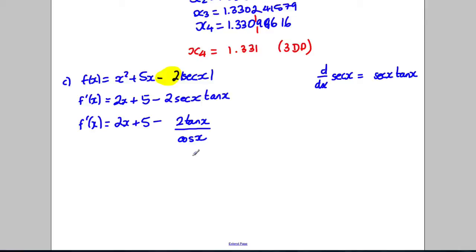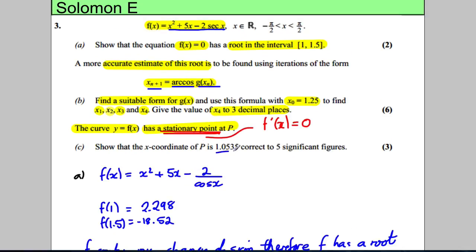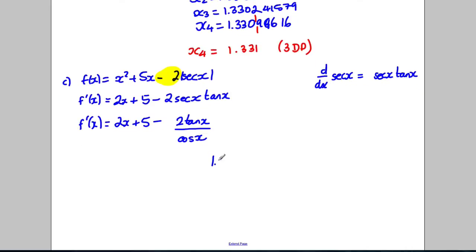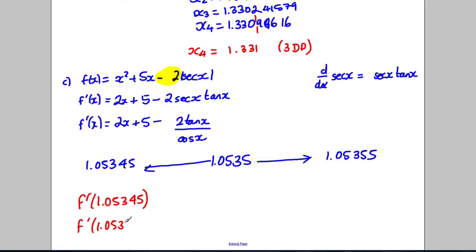Okay. So we could rewrite it like that. Now, if we're trying to show it's got a root of 1.0535, so 1.0535, what we need to do is check this upper bound. So 1.05355 and check this lower bound here, 1.05345. Substitute those into f dashed x and show that there's a change of sign around 0. So what we're going to work out is f dashed here of 1.05355 and we're going to work out f dashed of 1.05345. Show that there's a change of sign.